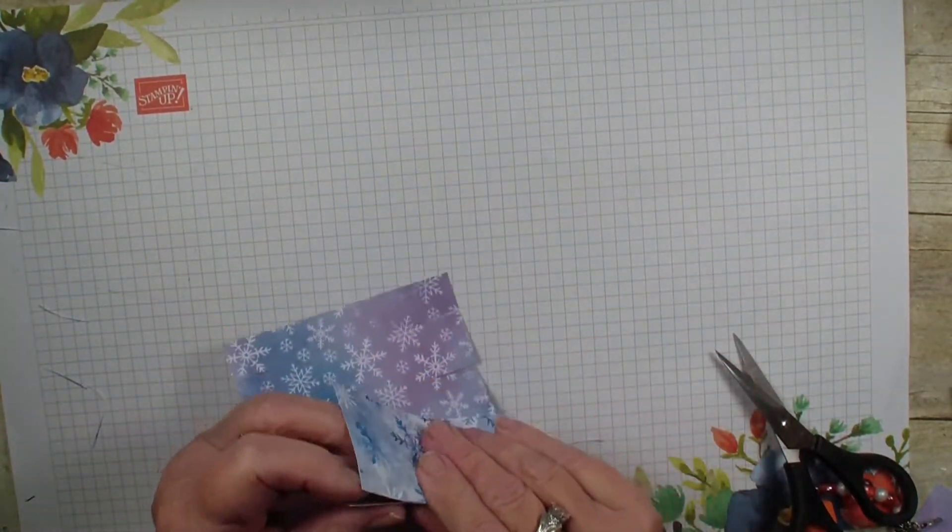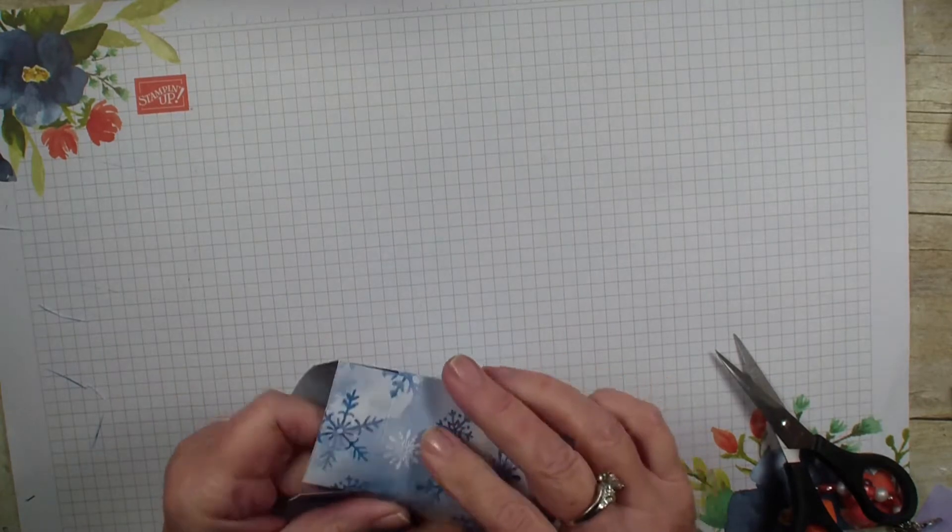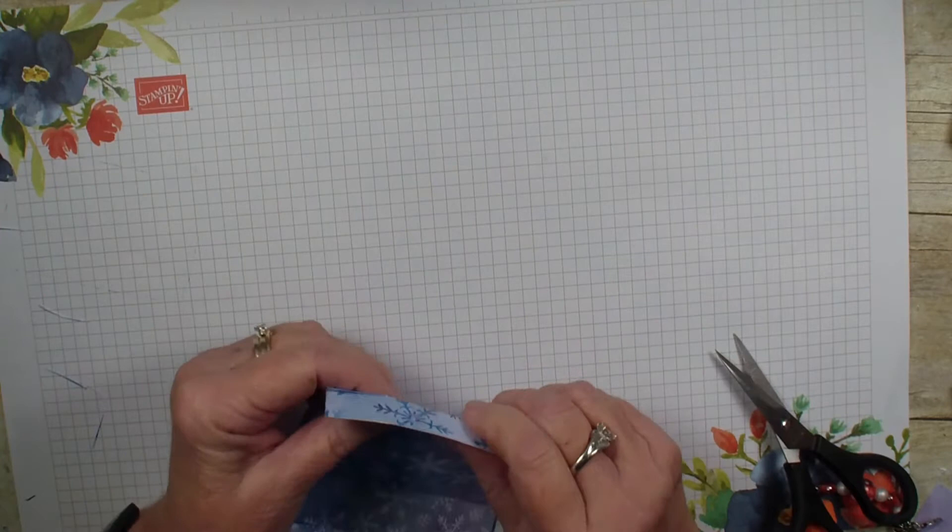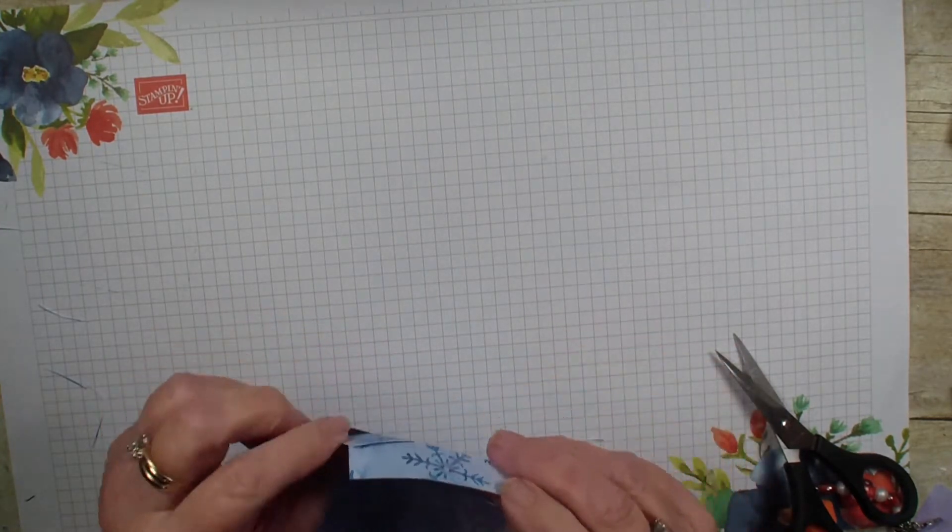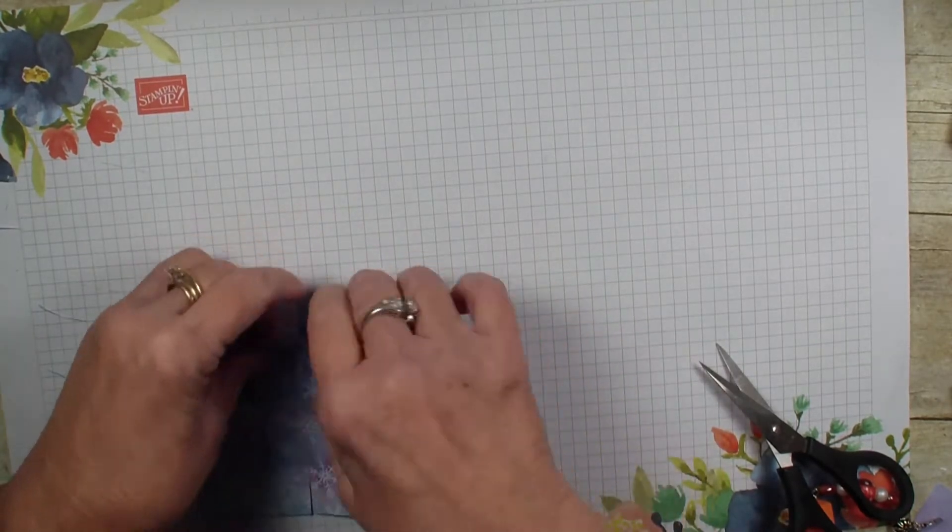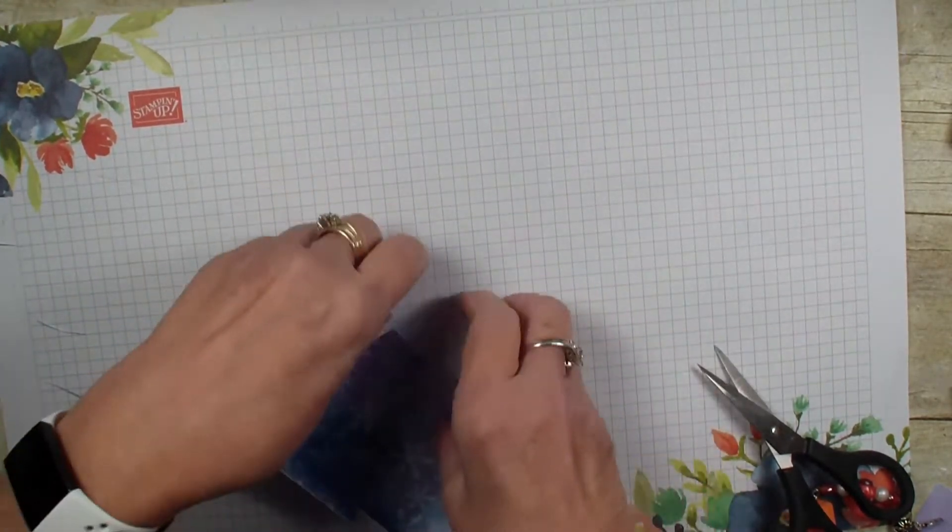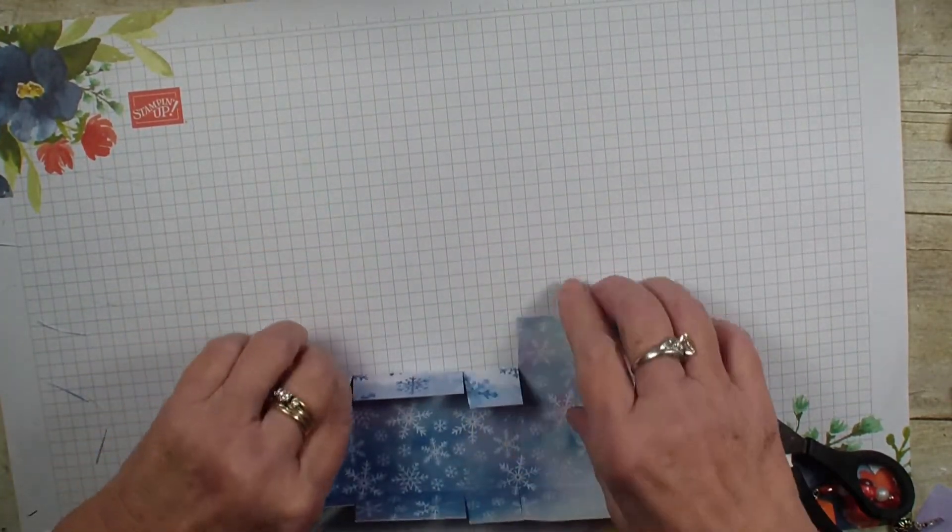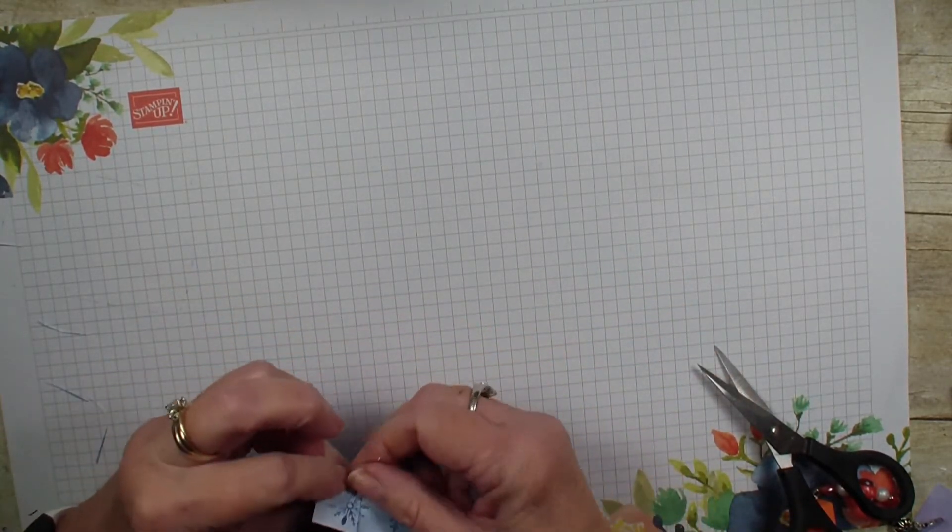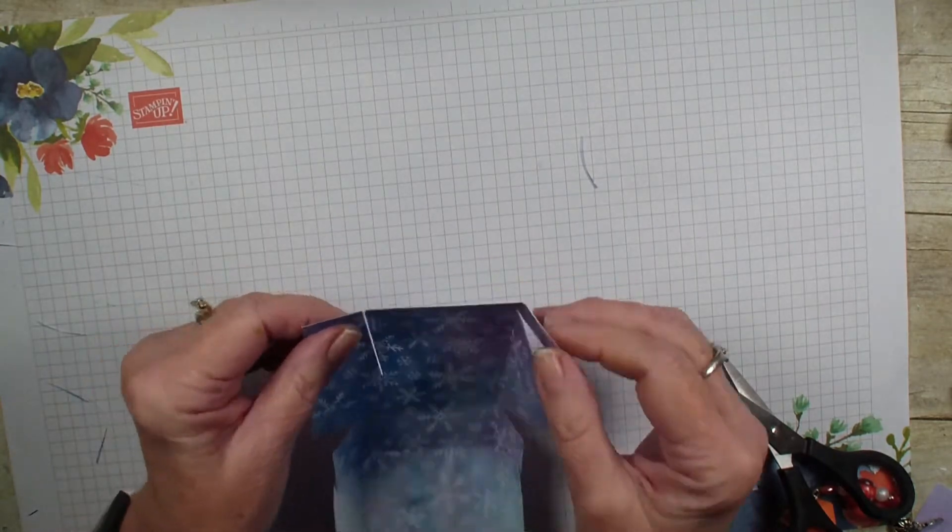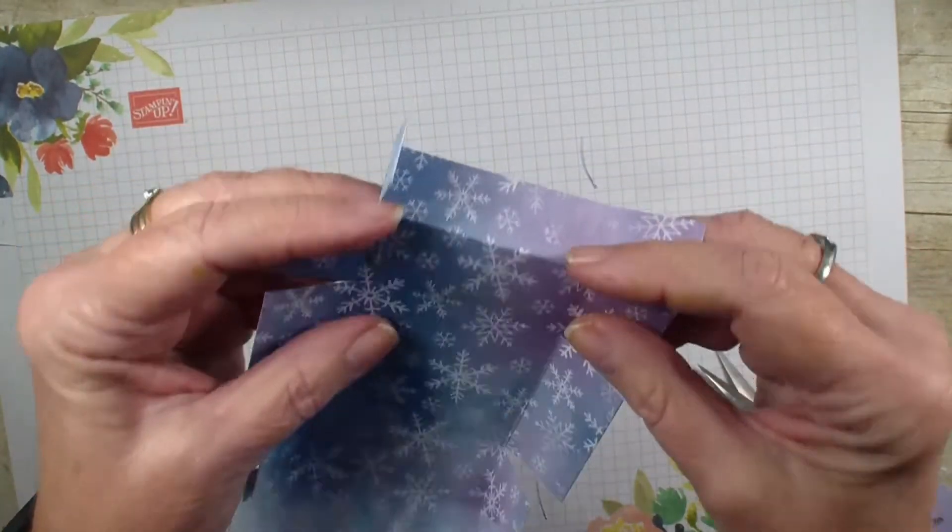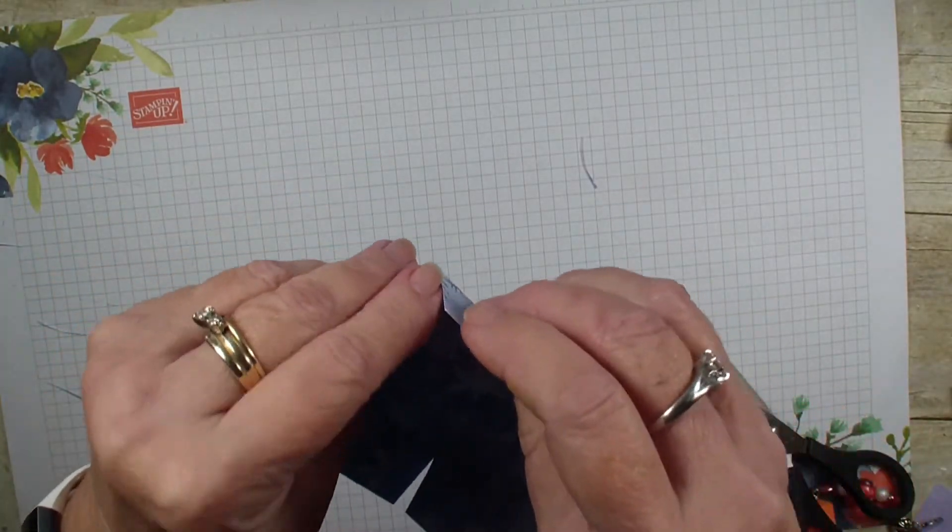We're going to work those score lines back and forth like so. We are going to take the sides and fold them in also. What I need to do is to cut, this is the short score line on this side and the next one.